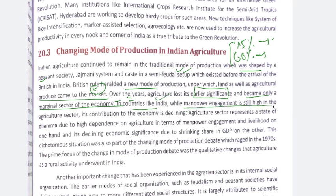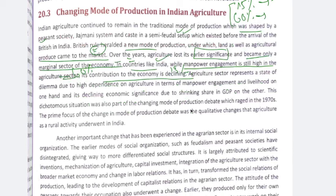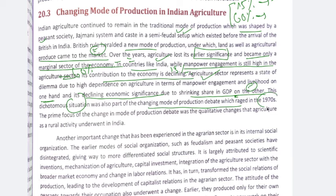In countries like India, manpower engagement is still high in agriculture — 60% — while contribution to the economy is declining at 15%. The agriculture structure represents a state of dilemma due to high dependence in terms of manpower engagement and livelihood on one hand, and declining economic significance due to shrinking share in GDP on the other. This is a dichotomous situation — also part of the changing mode of production debate which started in the 1970s — and the conditions have not changed much; it is still declining.